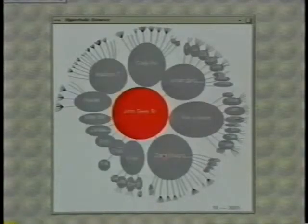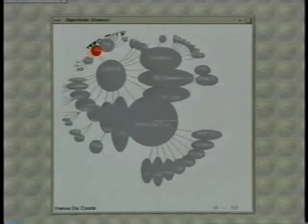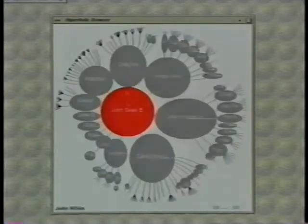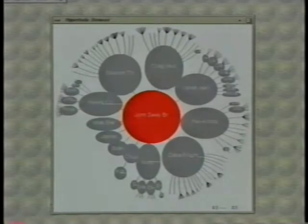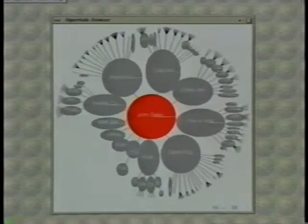Here we use wafers to show the amount of space available for node information. Notice how nodes grow as they approach the center and shrink as they recede. We can interactively adjust how space is proportioned, say perhaps to introduce a sort of spatial socialism.